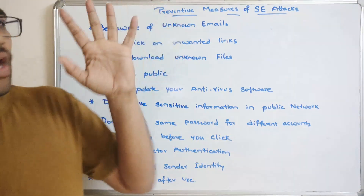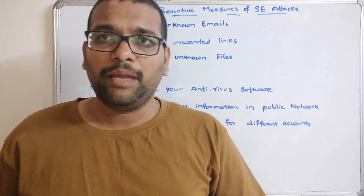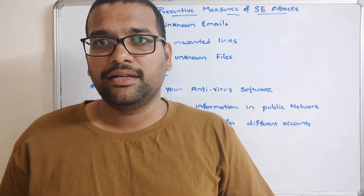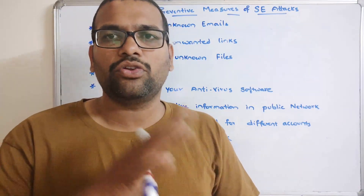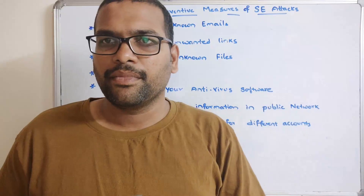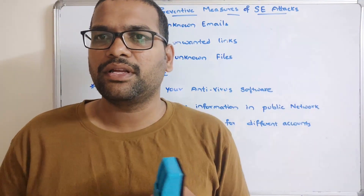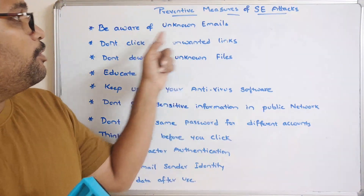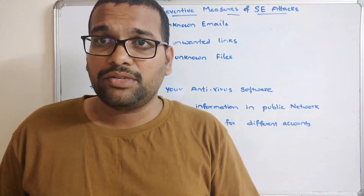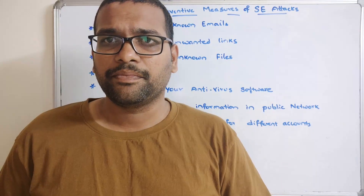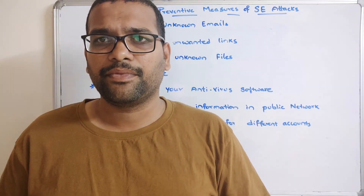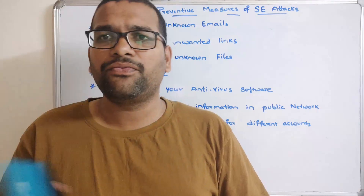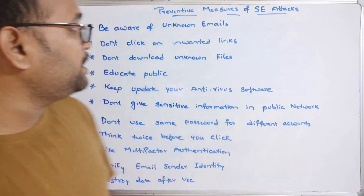The first preventive measure is to be aware of unknown emails. We've seen one type of social engineering attack called phishing, where you receive malicious links and out of curiosity the user clicks on that link, gets redirected to a malicious website, and automatically provides sensitive information. So be very careful about unknown emails — don't open emails coming from unknown persons.